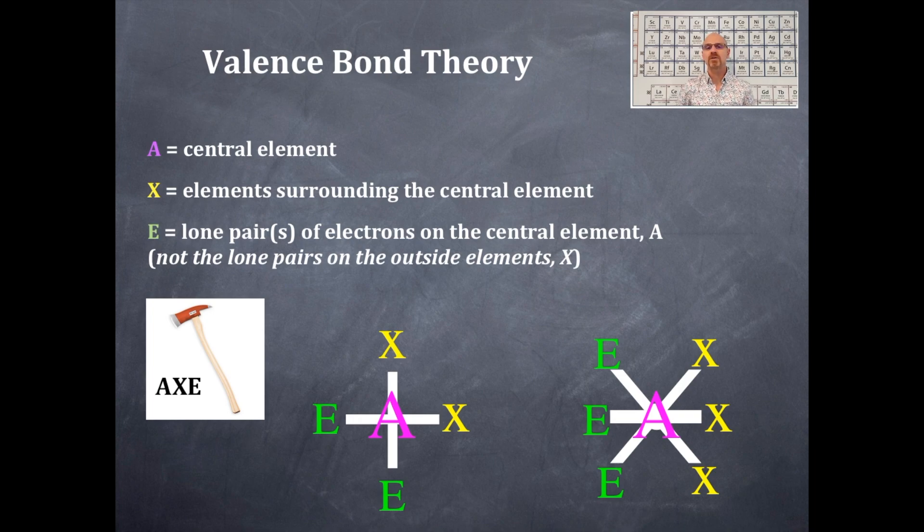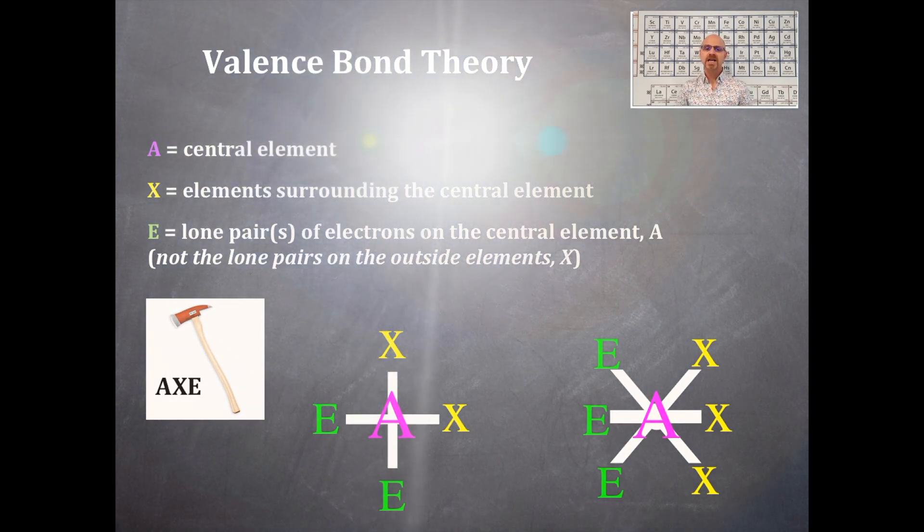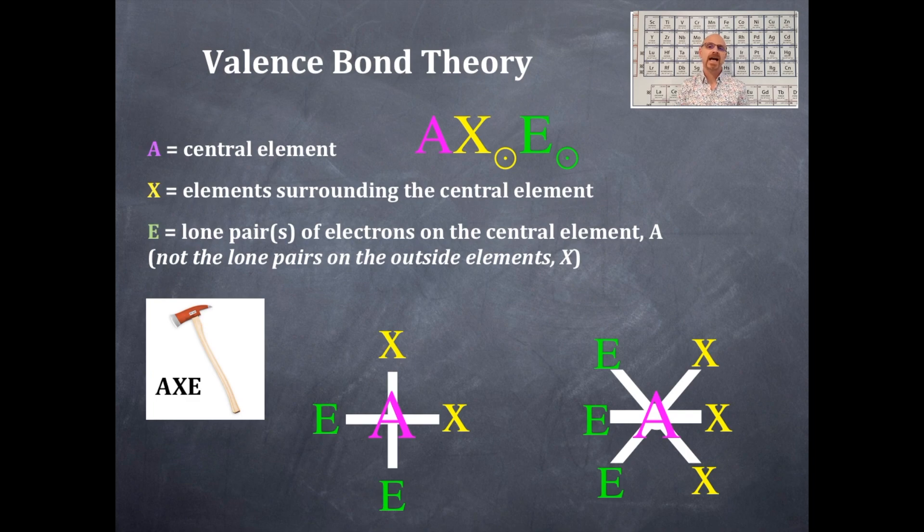You can also have five domains. I don't have that right here, but you can replace bonding domains with lone pairs as well. There's only one A and there could be multiple X's and there might be multiple E's. There might not be any E's on the central element.